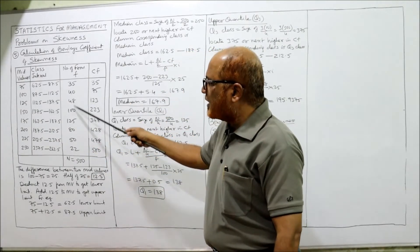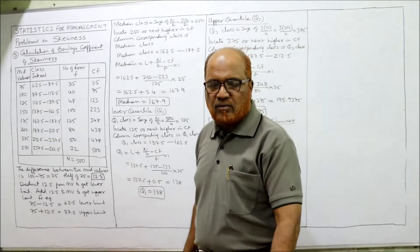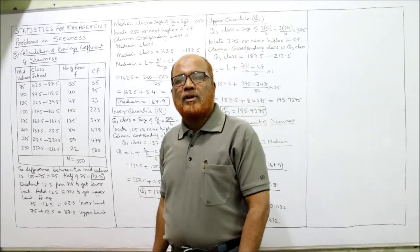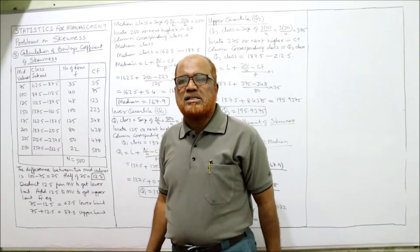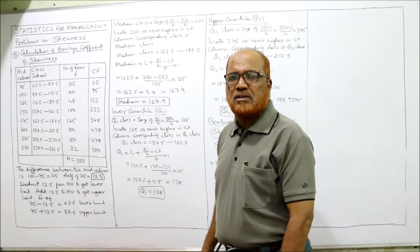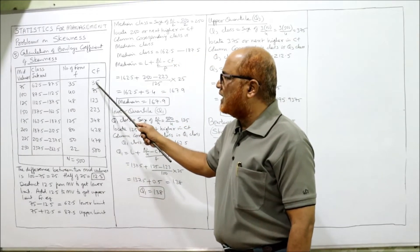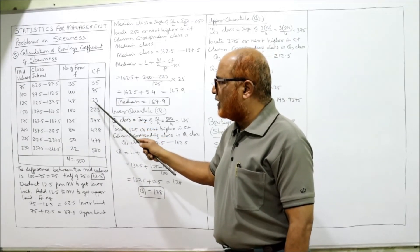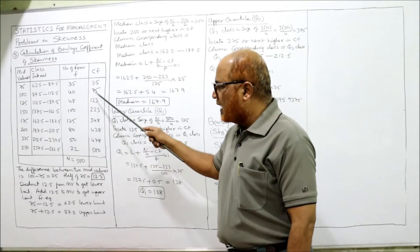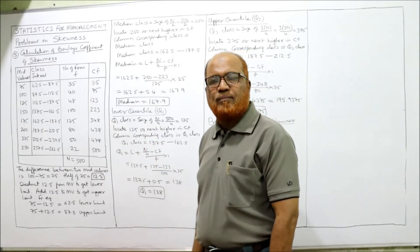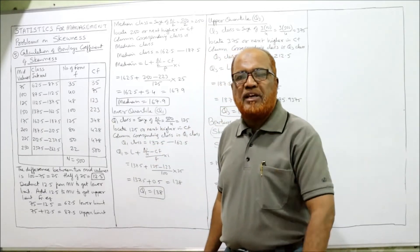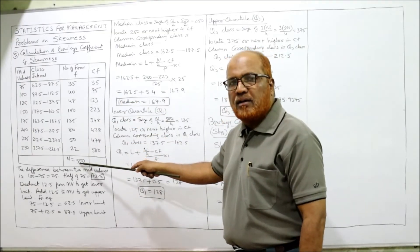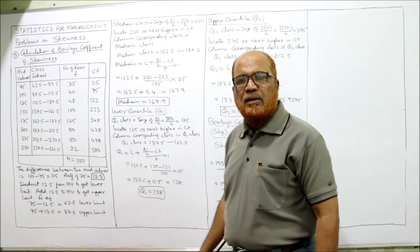The frequencies are taken as given in the problem. We now calculate cumulative frequency (CF) for finding median and quartiles: 35, 35+40=75, 75+48=123, 123+100=223, and so on. The last CF must equal n. We get n = 500 and the last CF = 500, confirming our calculations are correct.